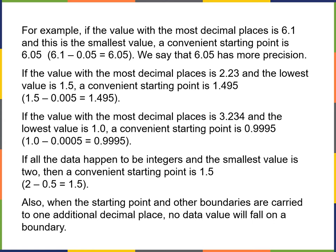Typically you won't see that many decimal places with basic business statistics calculations. Now, if all the data happen to be integers and the smallest value is 2, then a convenient starting point is 1.5. If these are just integers, it makes it real simple and easy.